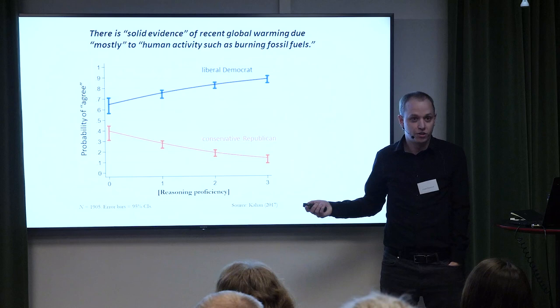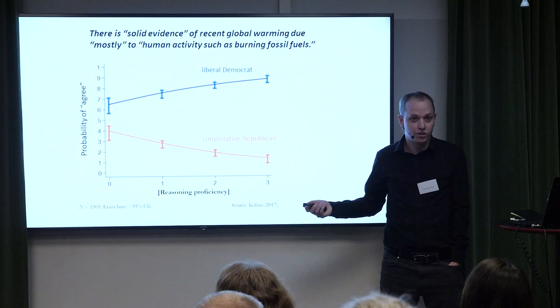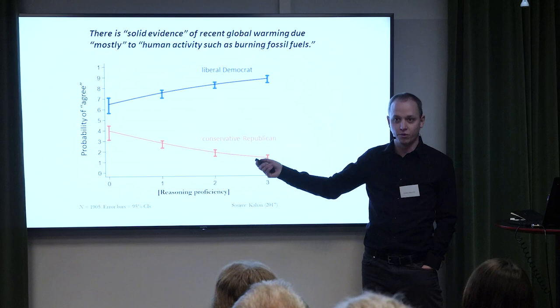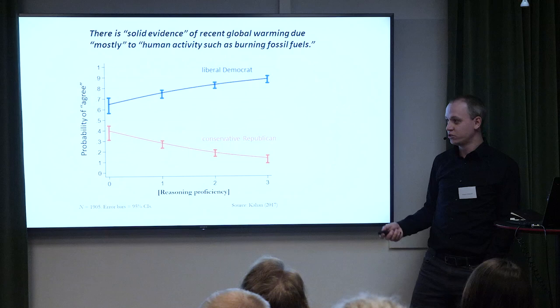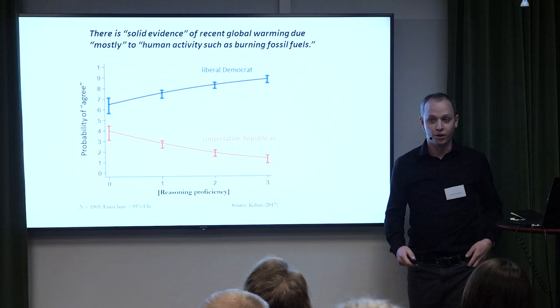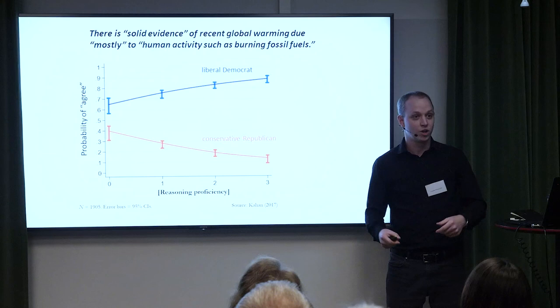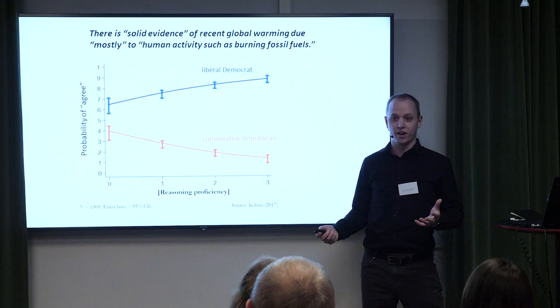But for Republicans, it's the opposite — Republicans who are better at reasoning are less likely to believe that climate change is a problem than those who are worse at it. What this implies is that they're using their reasoning to simply justify what they want to believe. It's not getting them closer to the truth — it's just polarizing them. Reasoning is backfiring in this context: being good at it is making you come to the wrong conclusions.